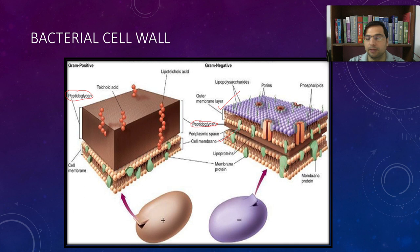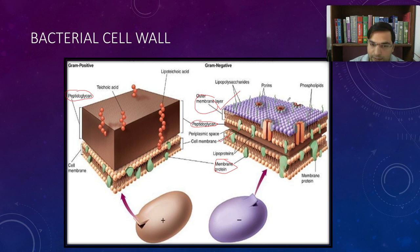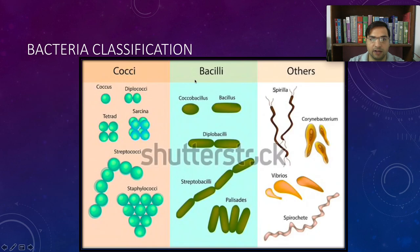Gram negative also has an inner bilipid layer membrane, which is the cell membrane. One more characteristic difference between gram positive and gram negative, apart from the thin cell wall and having two membranes, is the presence of lipopolysaccharides in gram negative bacteria.